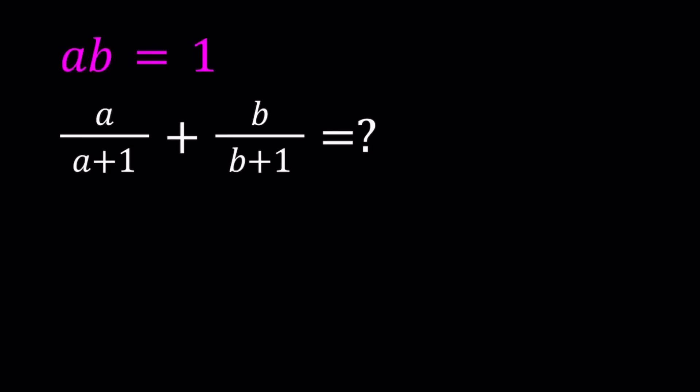Hello everyone. In this video, we're going to be simplifying a rational expression. We are given that a times b is equal to 1, and we're supposed to simplify a over a plus 1, plus b over b plus 1. I'll say not evaluate necessarily because we do not know if this has a constant value — maybe we're going to find something in terms of a or b or both. I'll be presenting three methods, so let's start with the first one.